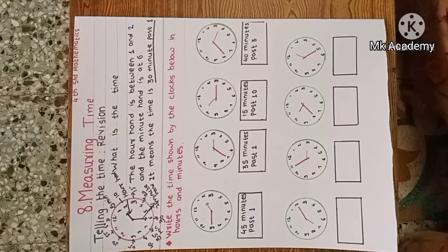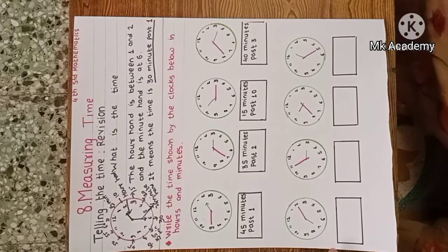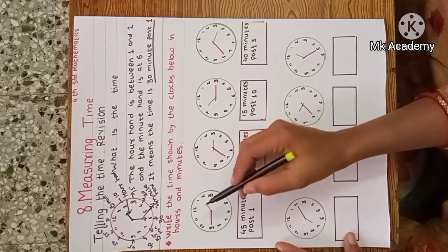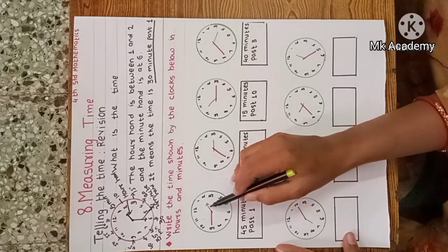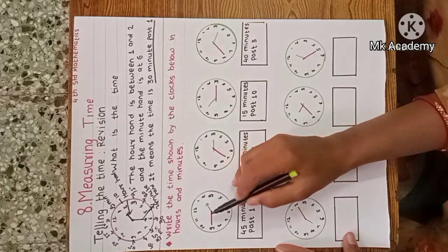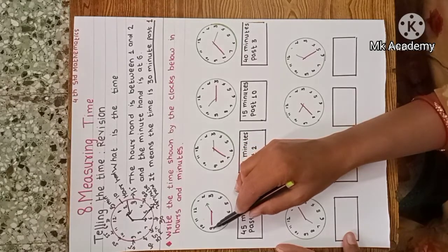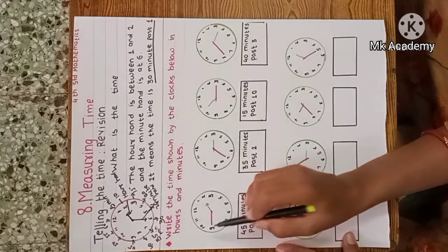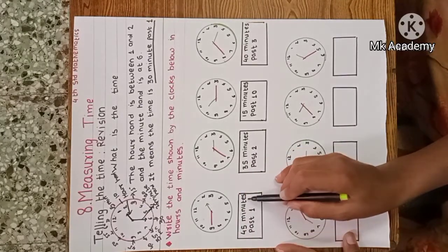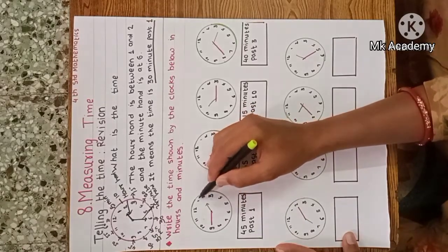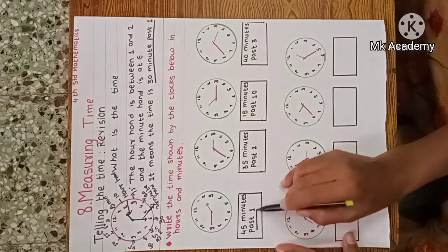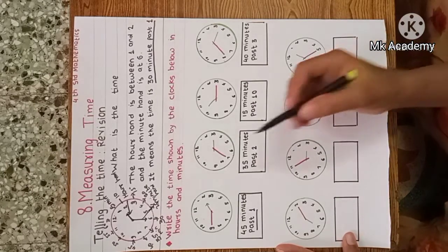Now the question: write the time shown by the clock below in hours and minutes. First clock: the hour hand is in between one and two, and the minute hand is on nine. Nine means 45 minutes, so the time is 45 minutes past one.